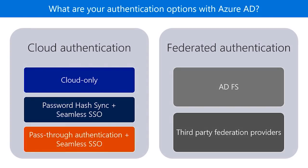Azure AD supports many authentication options to meet the requirements of all types of organizations. The first option is cloud only. This is for the born-in-cloud organizations with no on-premises infrastructure. Here, you can establish user identities directly in the cloud, and Azure AD handles all of the authentications completely in the cloud. All the other options require an on-premises active directory. We call this hybrid identity.